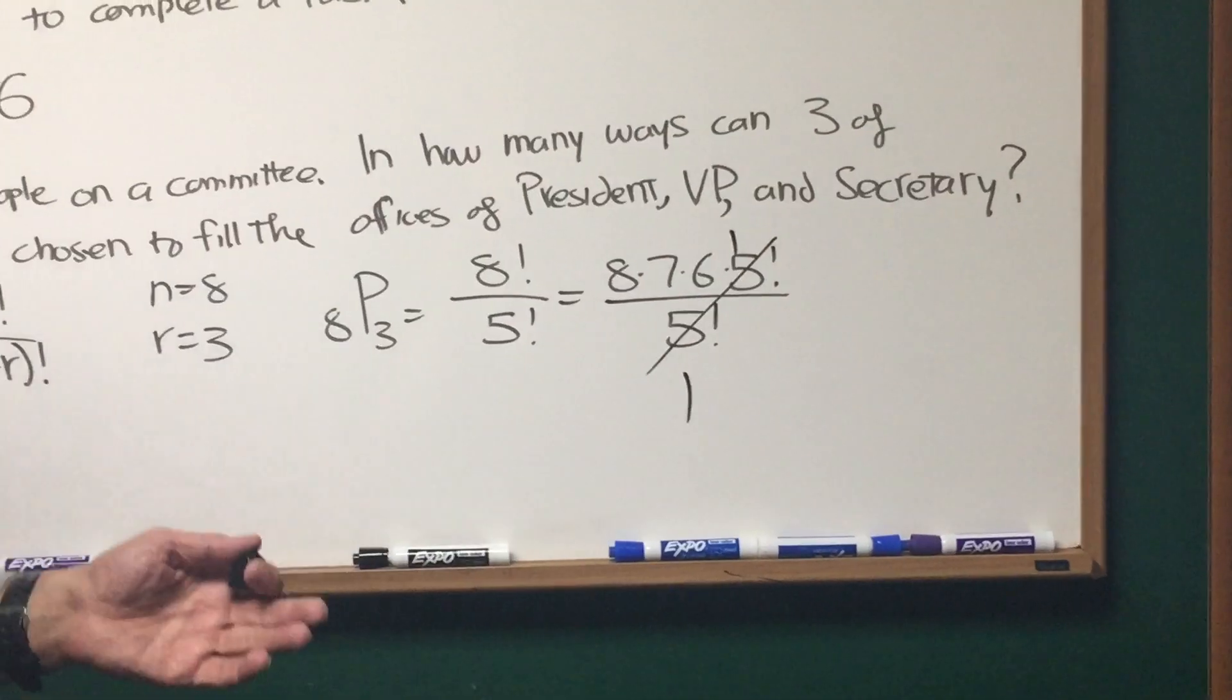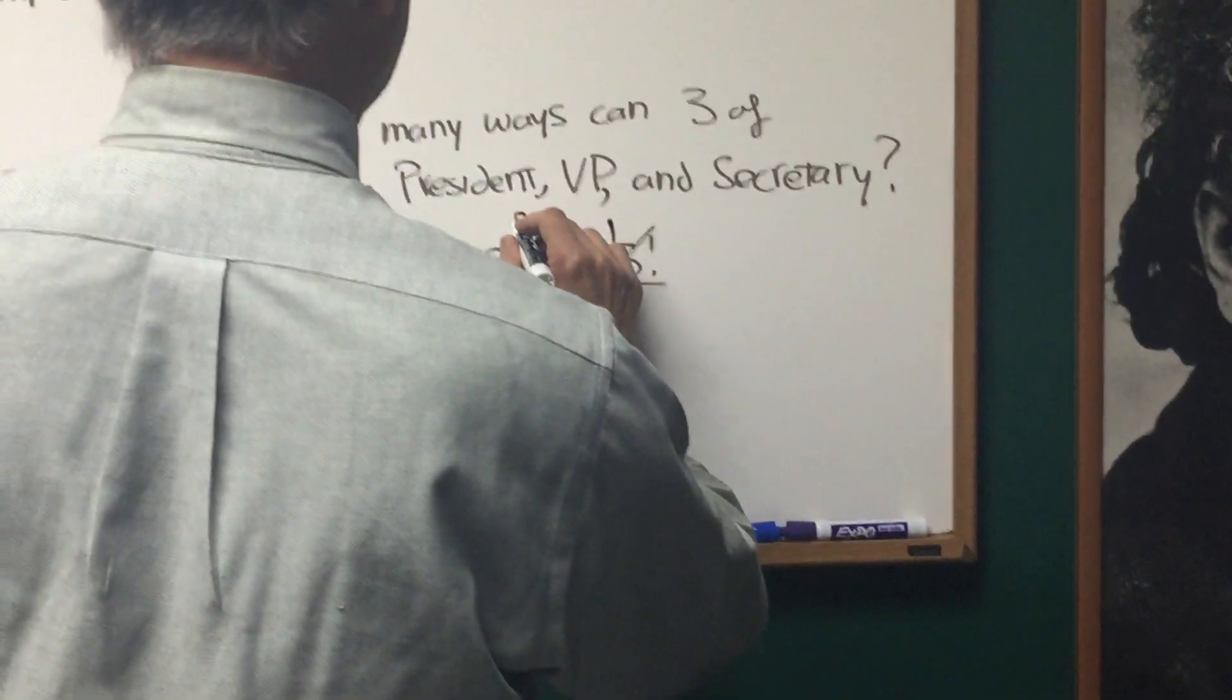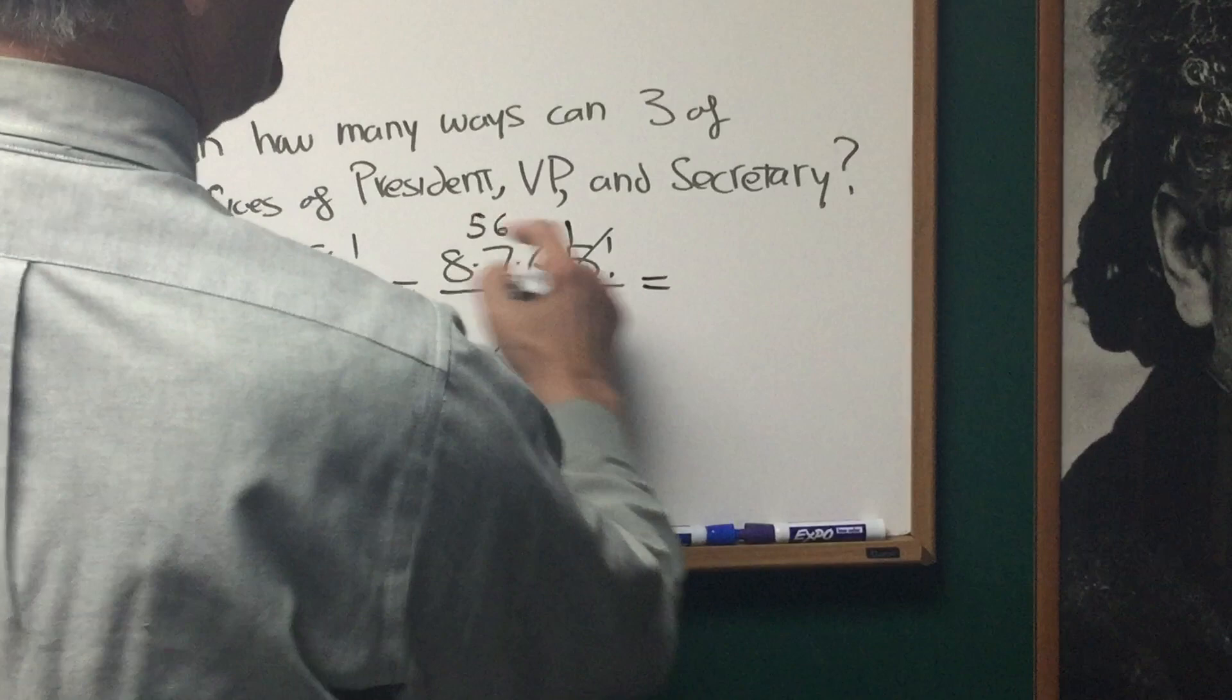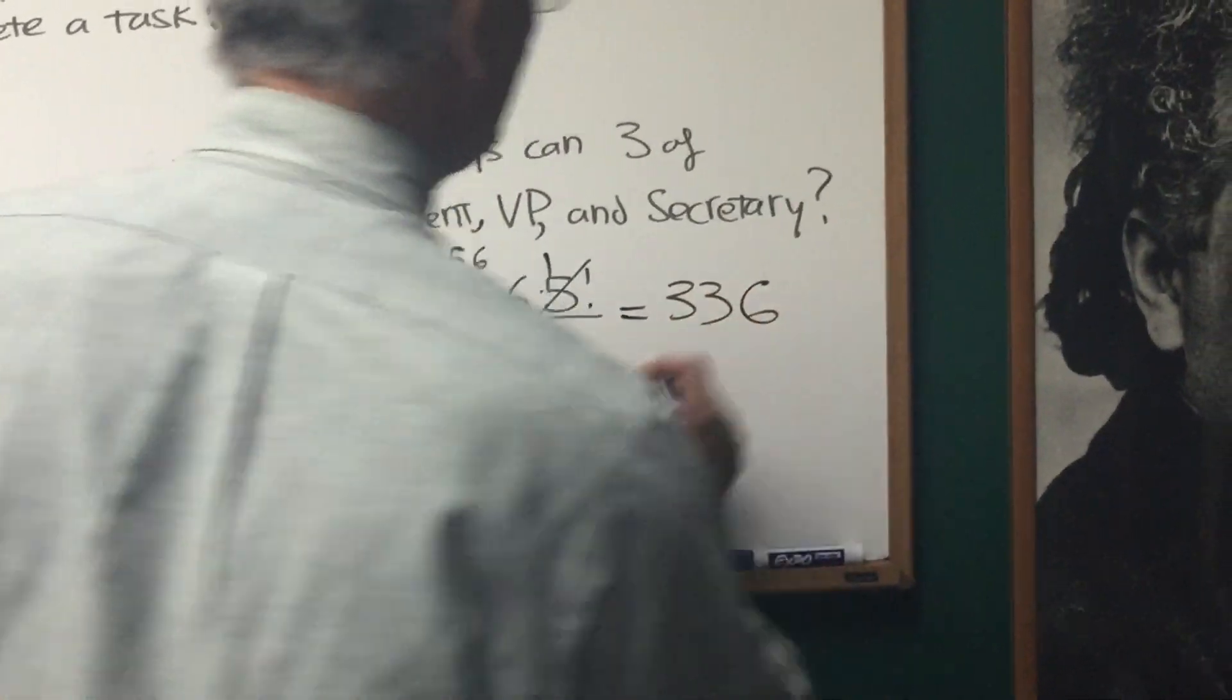Eight times seven times six times five factorial over five factorial. The five factorials cancel. And we're left with, what do we have here? Seven times eight is 56. And then that comes out to be six times six is 36. Six times five is 30. So that's 336.